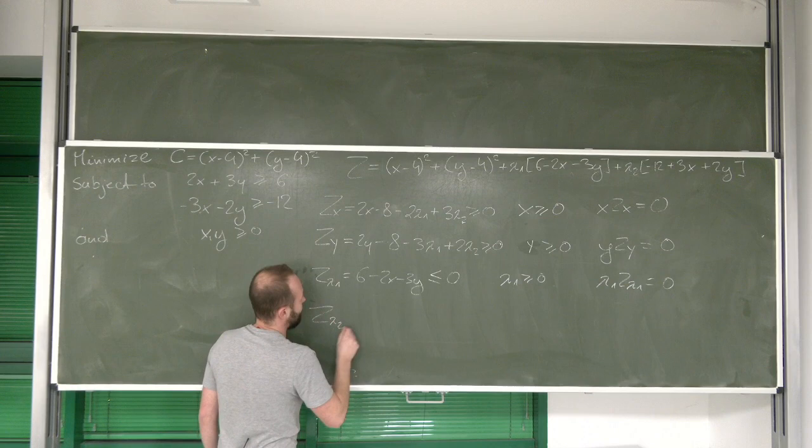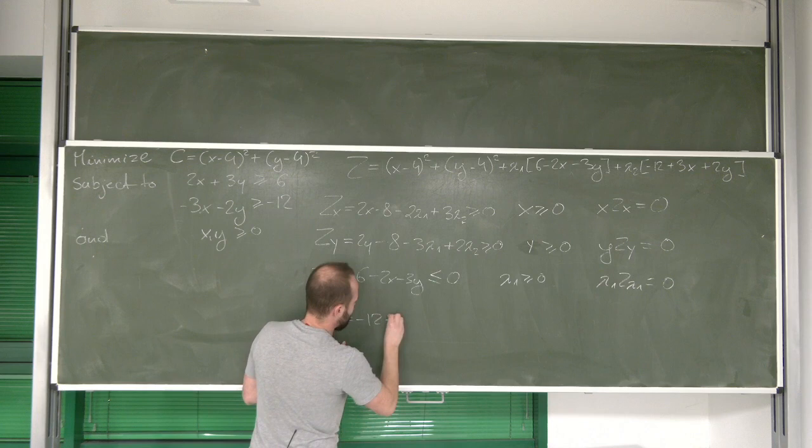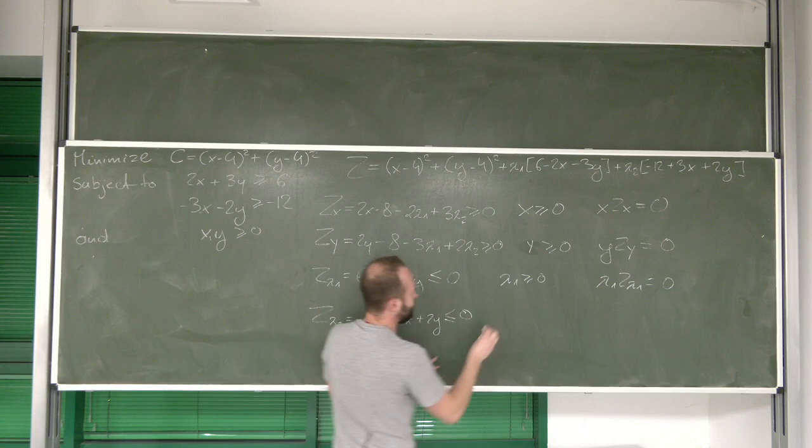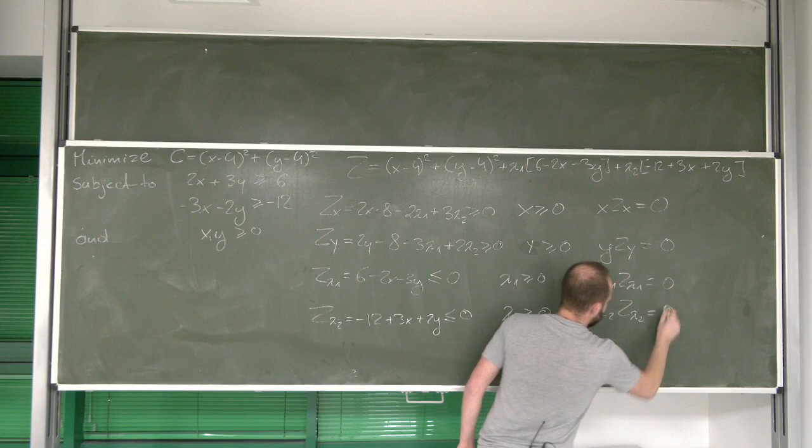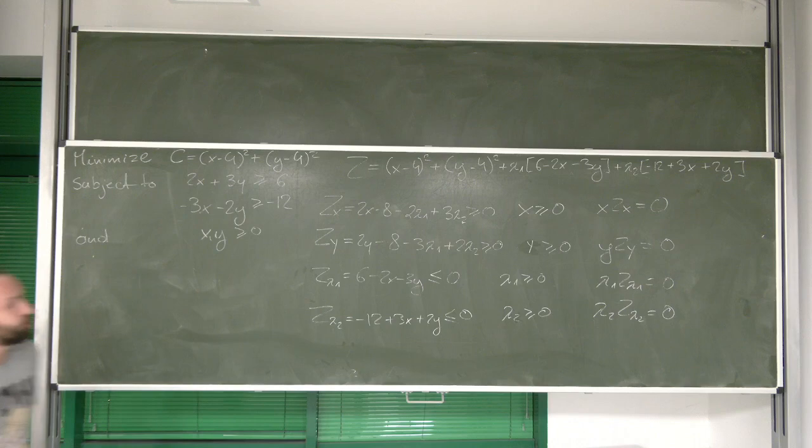Finally, the last one. For lambda 2, we get negative 12 plus 3x plus 2y needs to be lower or equal to 0. Lambda 2 needs to be non-negative and complementary slackness condition.